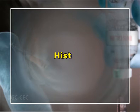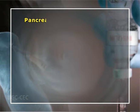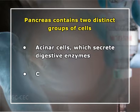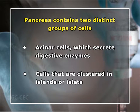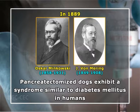Let's learn about the history. Few events in the history of medicine are more dramatic than the discovery of insulin. Although the discovery is appropriately attributed to Banting and Best, others provided important observations and techniques that made it possible. In 1869, German medical student Paul Langerhans noted that the pancreas contains two distinct groups of cells: acinar cells which secrete digestive enzymes, and cells clustered in islands or islets. Direct evidence for a second function came in 1889 when Minkowski and von Mering showed that pancreatectomized dogs exhibit a syndrome similar to diabetes mellitus in humans.